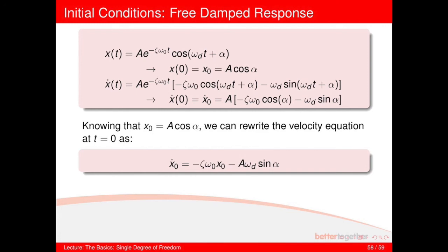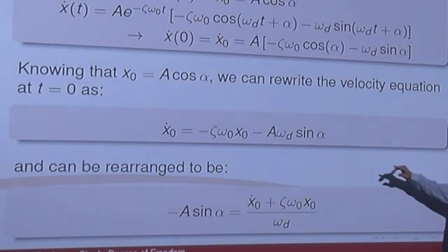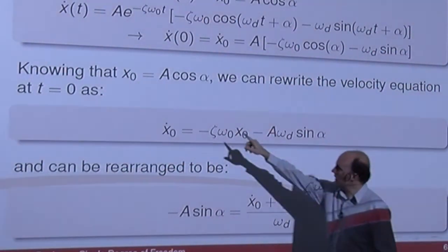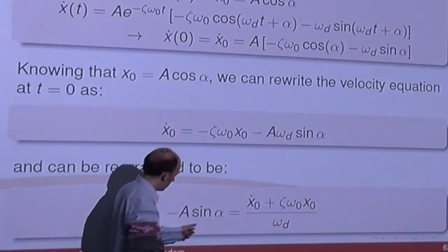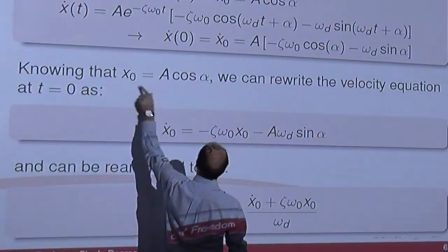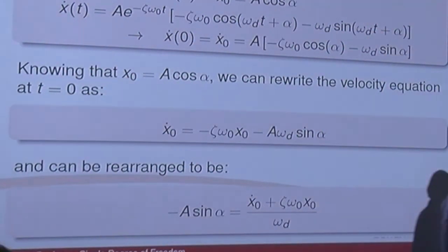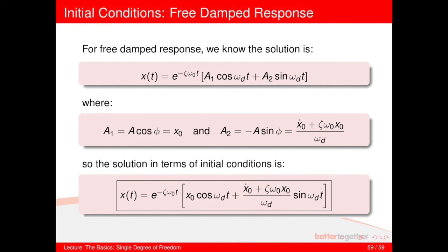Since x-zero equals A cosine alpha, you can rewrite the velocity equation at t equals zero accordingly. Rearranging, you can find minus A sine alpha as a known expression in terms of initial conditions. That gives you a1 and a2 for the alternative form. You take those two terms and plug them into the alternative damped solution form, giving the full solution with a1 and a2 expressed in terms of initial conditions.